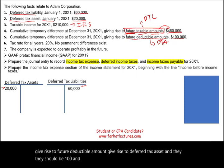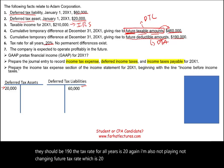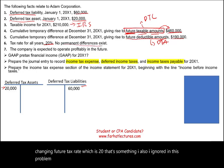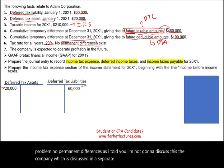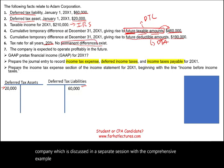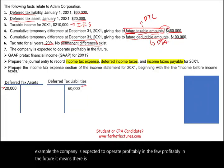The tax rate for all years is 20%. I'm also not changing the future tax rate. No permanent differences — I'm not going to discuss that here, as it's discussed in a separate session with the comprehensive example. The company is expected to operate profitably in the future, meaning there's no need to create an allowance.